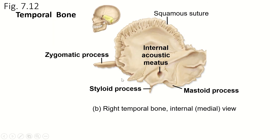Now this is the medial side of the temporal bone. We're looking from the inside of the skull looking out, and you can see this nice flat squamous suture there. We have an internal acoustic meatus — this is not continuous with the external meatus; they are two different holes. We've got the zygomatic process sticking out, and then we can see the styloid process and the mastoid process there.